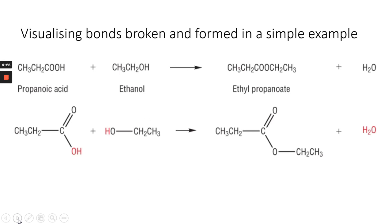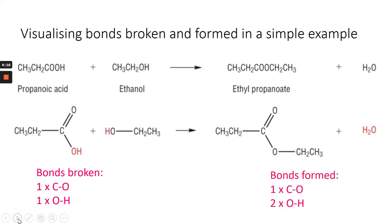Looking at a common example — propanoic acid and ethanol — let's concentrate on the bonds being broken: one C single bond O, one O single bond H; and the bonds being formed: one C single bond O and one O single bond H.